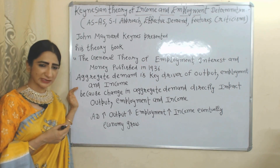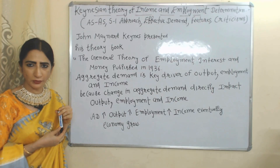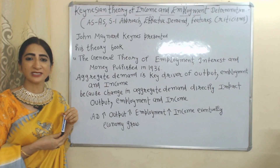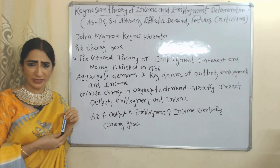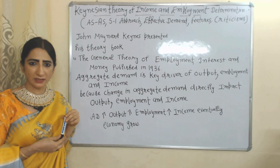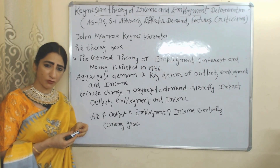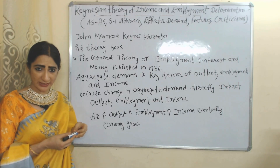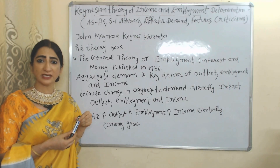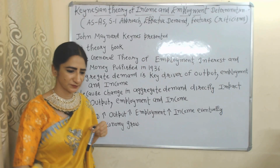According to this theory, aggregate demand is the key driver of output, employment and income. That means a change in aggregate demand directly influences output, employment and income. When aggregate demand increases, output also increases. As output increases, employment increases, income increases, and eventually our economy grows.